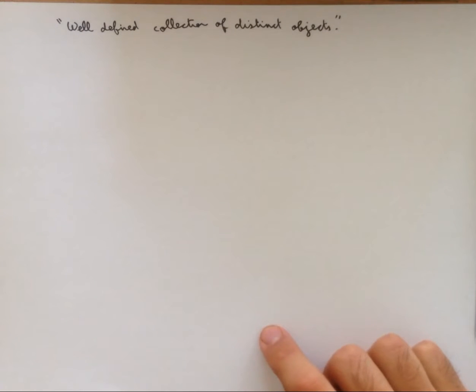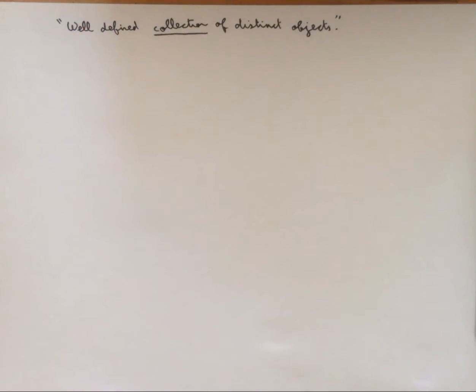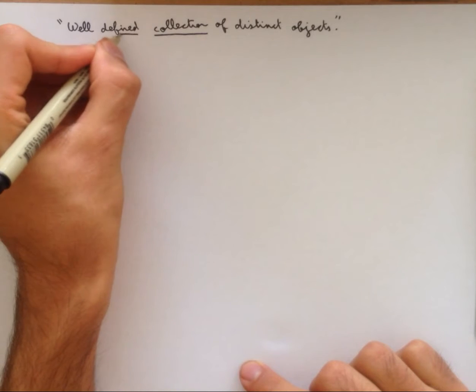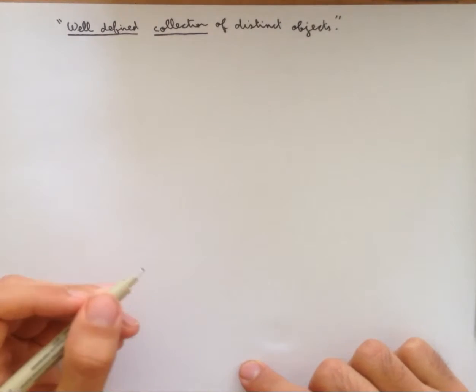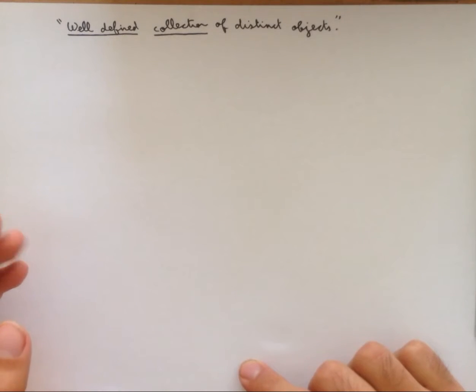So let's take this apart. The first thing is a collection. So this is just the idea that we're taking a bunch of things and we're putting them together into one thing. The next thing is well-defined. So that means that given an element, the element is either in the set or it isn't. And it's agreed upon, so the set of all good books is not a set because there's disagreement on what is and isn't a good book.